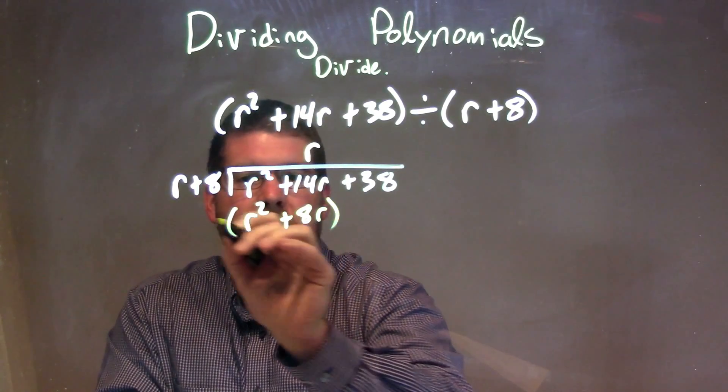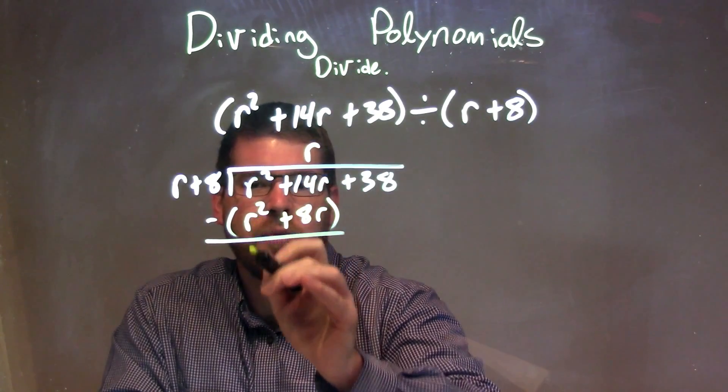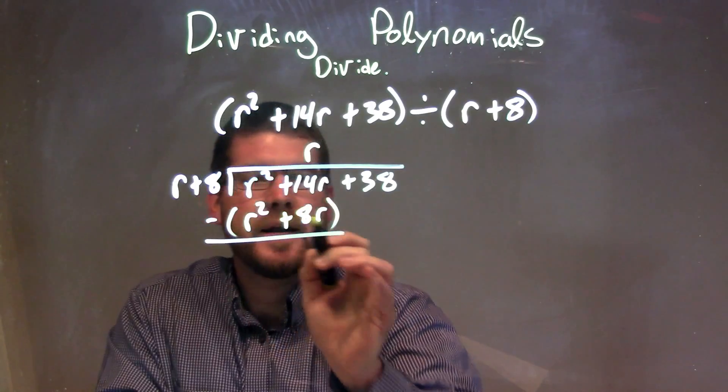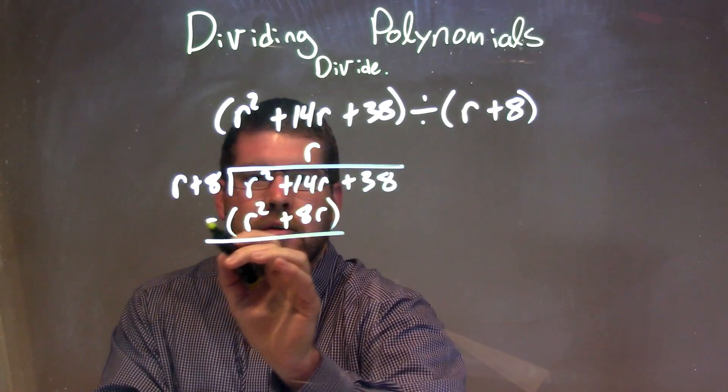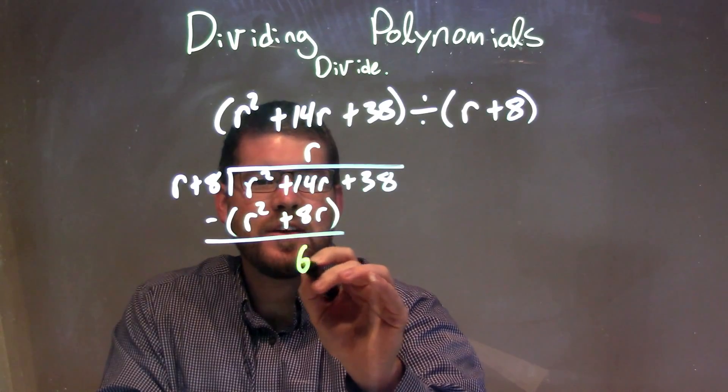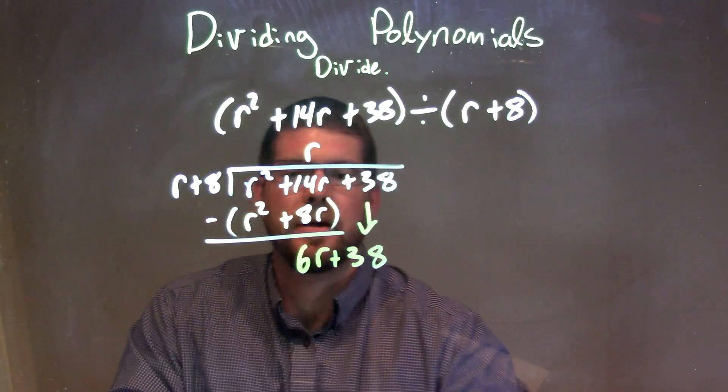So now we need to subtract this from what's above it. Make sure you put parentheses there to subtract everything. r squared minus r squared is just 0. Great, that should happen. And 14r minus 8r comes out to be a positive 6r. We bring down the 38 and we add it right there.